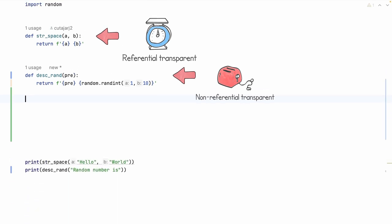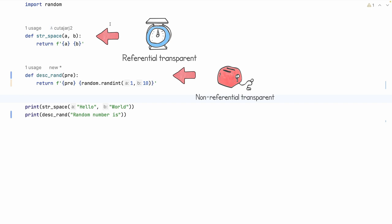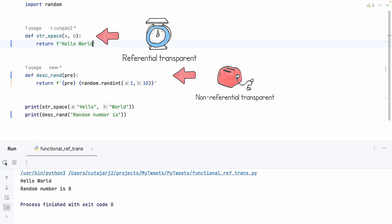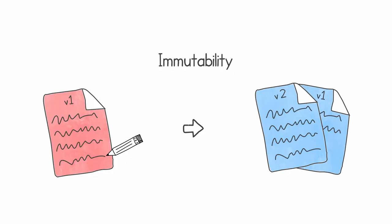You can understand why `description_random` is not referentially transparent: every time we call it, it can potentially give us a different return value. Let's call both functions — the first with 'hello' and 'world', and the second with a prefix string. As expected, it gives me 'hello world' and 'random number is 5'. If I run it again, the first call gives the same exact output, while the second call gives a different random number each time. In fact, with referential transparency I can replace the body of the function with the constant 'hello world' for the same two inputs and the behavior of my program does not change.